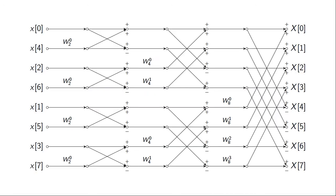In order to answer this question, let's recall how the FFT algorithm computes the discrete Fourier transform. This was done using a set of operations generally known as butterfly operations, where two inputs were given to each stage, one of them multiplied by complex numbers, followed by either an addition or subtraction of the resulting numbers. These were arranged in a sequence of layers that, at the end, computed the discrete Fourier transform.